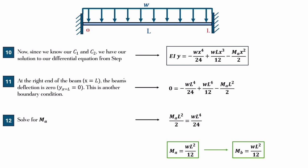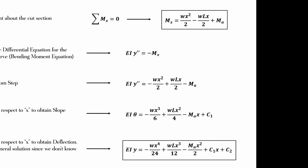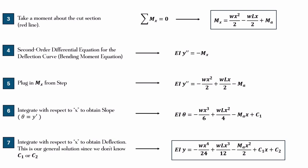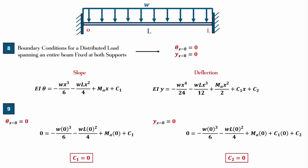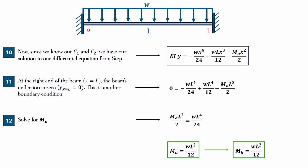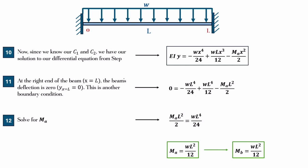As you can see there, EIY is equal to minus WX to the 4 over 24, plus WL X cubed over 12, minus MA X squared over 2. And that's just this equation right here at the very bottom that you see. I found my C1 and C2, so now that I have that, now I have my exact solution for this problem. We apply one more boundary condition at the end of the beam.